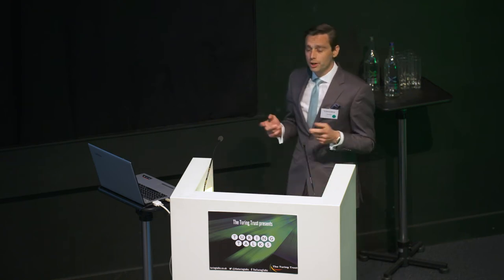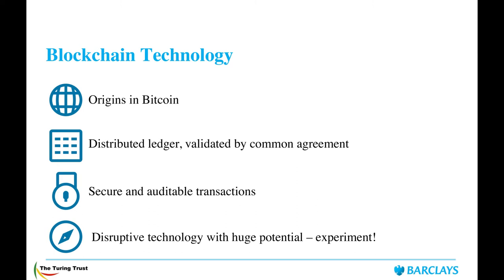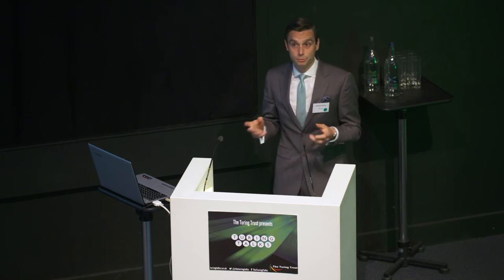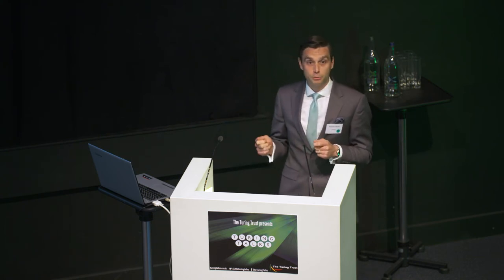I'd like to talk about blockchain technology. Blockchain has its origins in Bitcoin. Following the financial crash in 2008, a collective or individual known as Satoshi Nakamoto developed a remittance platform where a remitter and a beneficiary could send a token of value as a virtual currency between two people, unfettered by government. That is an absolute first — an unfettered currency that can be transferred electronically.